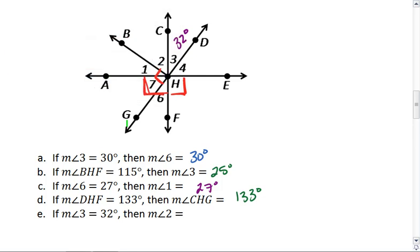Notice that since 1 and 7 are complementary, they're 90 degrees, and we have a straight line here, then 2 and 3 must also be 90 degrees. So if 3 is 32 degrees, then 2 must be 57 degrees.